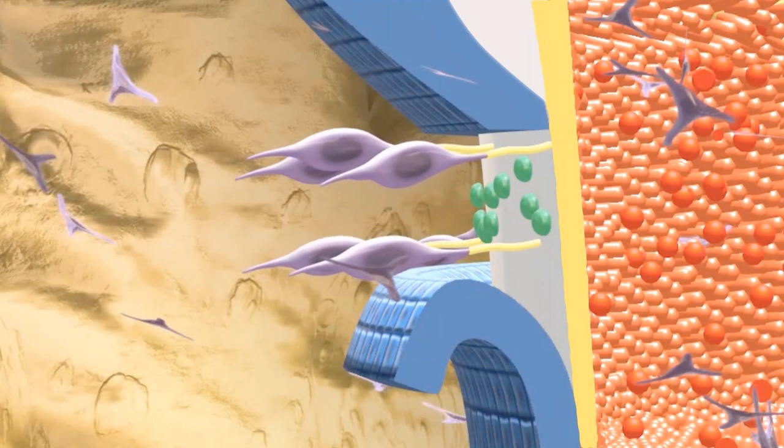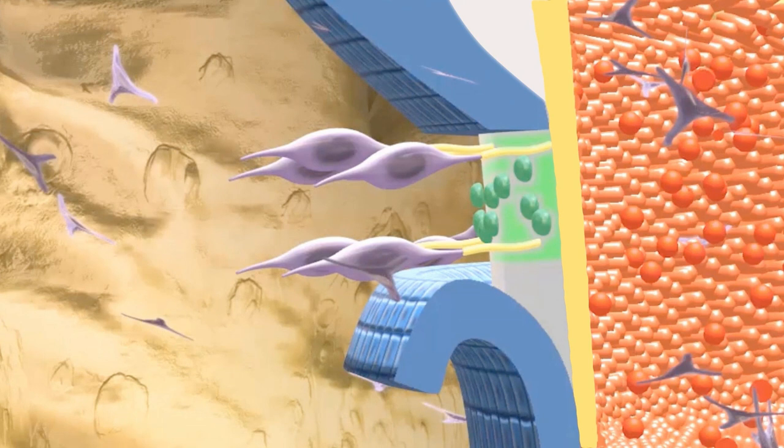Then, the fibroblastic cells secrete the extrinsic fibers, and the cementoblasts secrete the intrinsic fibers of the primary cementum. And that is how the dentin and the primary cementum of the root are formed.